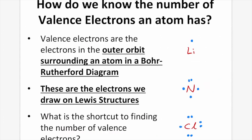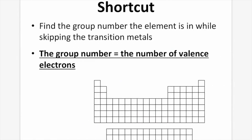But there is a shortcut to finding the number of valence electrons. It's simply the group number that the element is in. The group number represents the number of valence electrons, assuming you skip the transition metals.